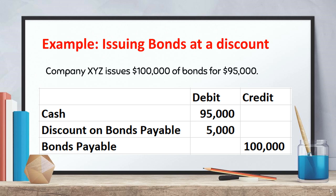Next, let's discuss issuing bonds at a discount. This happens when the bonds are sold for less than their face value. Example: Company XYZ issues $100,000 of bonds for $95,000. Journal entry: debit cash $95,000, debit discount on bonds payable $5,000, credit bonds payable $100,000.